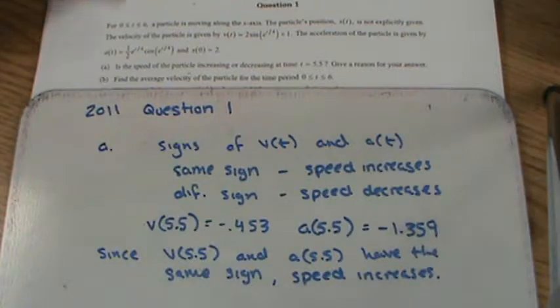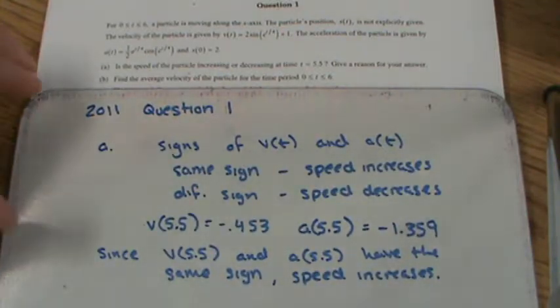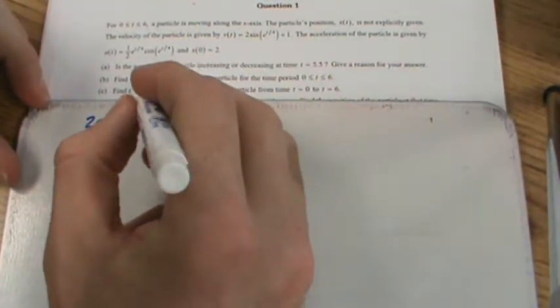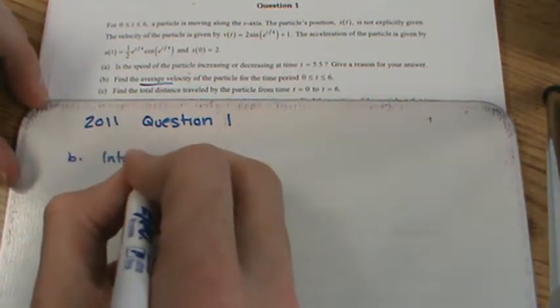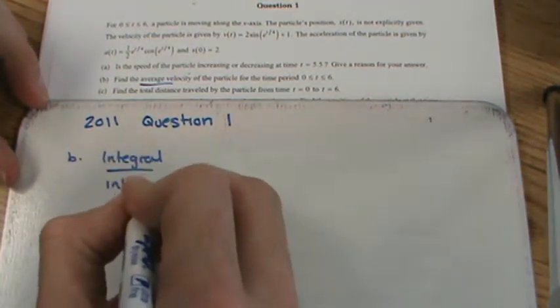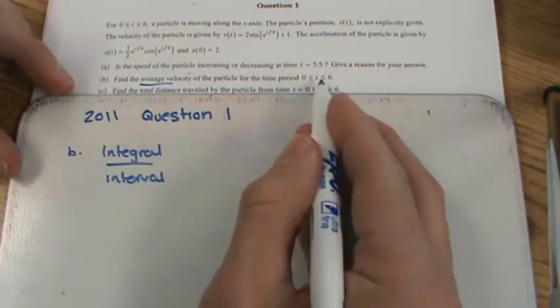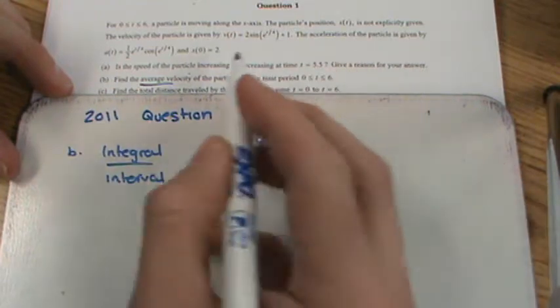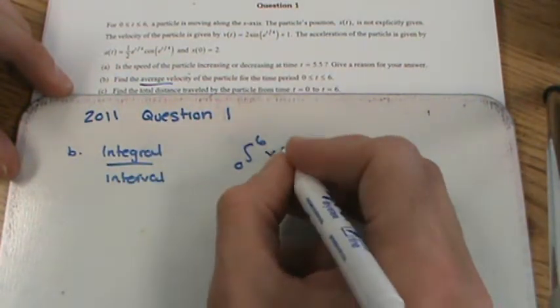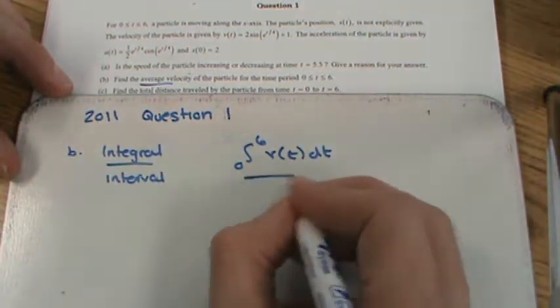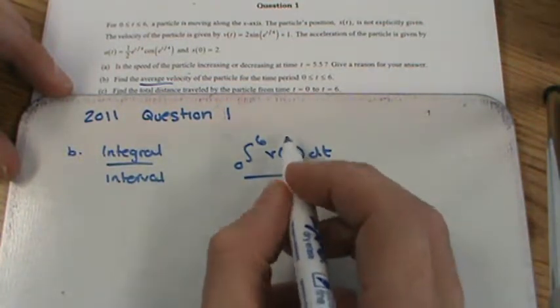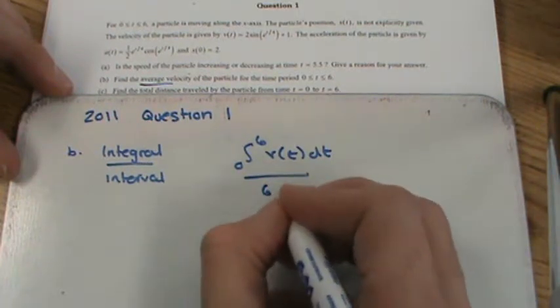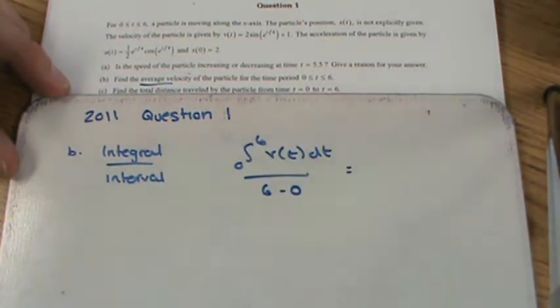Part B asks for the average velocity of the particle over the interval [0, 6]. When we see the word 'average,' we use integral over interval. So we set up (1/6) times the integral from 0 to 6 of v(t) dt. We don't need to write out the full function — writing v(t) is fine — and the interval length is 6 − 0 = 6.